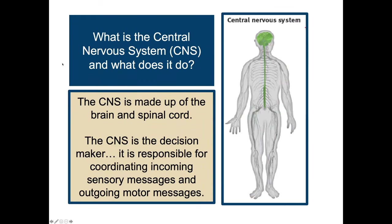The CNS — made up of the brain and spinal cord — is the decision maker, responsible for coordinating incoming sensory messages and outgoing motor messages. The brain enables thinking, feeling, and acting. There are tens of billions of neurons, each communicating with thousands of others, like an ever-changing wiring. The brain's neurons cluster into work groups called neural networks, connecting with nearby neurons through short, fast connections, with each layer connecting to the next.